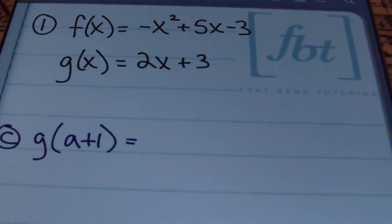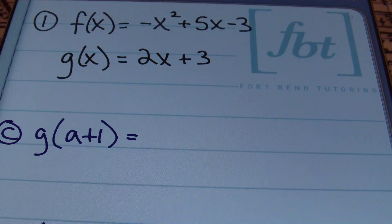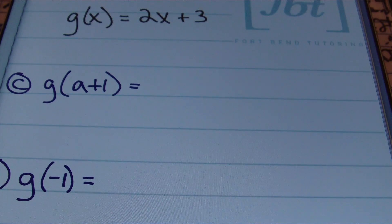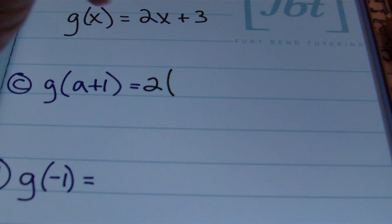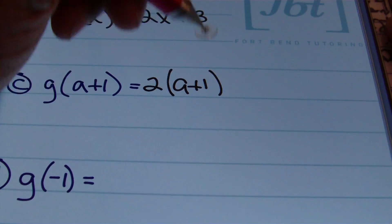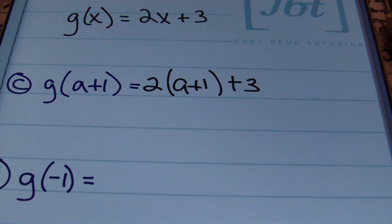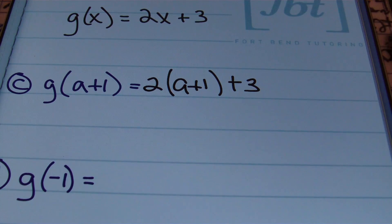We're still dealing with the same functions f and g — f equals negative x squared plus 5x minus 3, and g of x equals 2x plus 3. Now they're asking us to plug in a plus 1 wherever we have an x in our g function. We'll have 2 times the quantity of a plus 1, plus 3. Remember that x is being replaced with a plus 1. You are responsible for simplifying your result, which means you'll need to use the distributive property, the order of operations, or both.